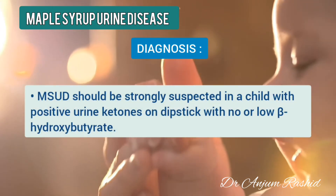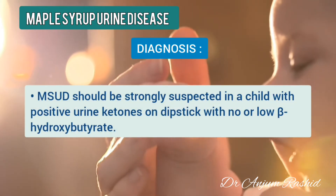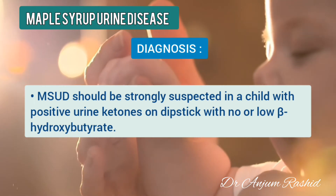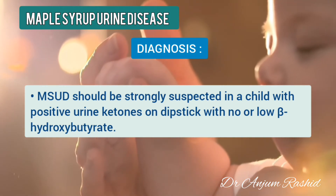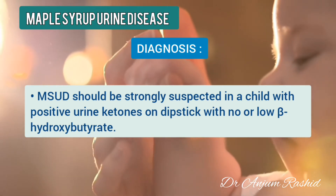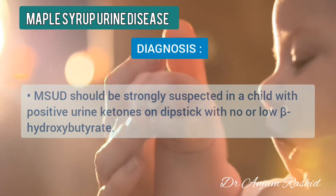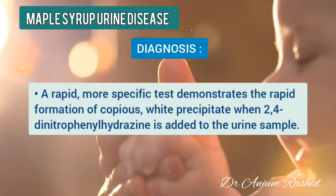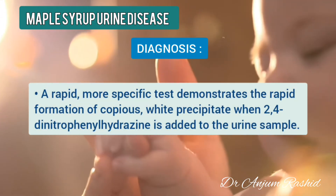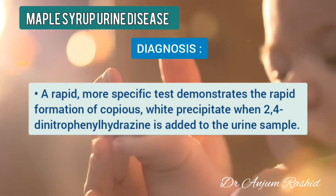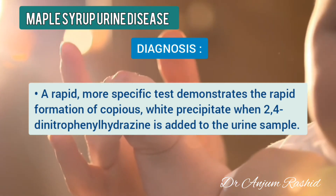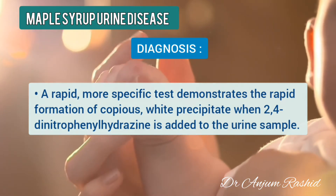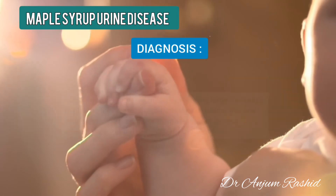Maple syrup urine disease should be strongly suspected in a child with positive urine ketones on the dipstick with no or low beta-hydroxybutyrate. A rapid, more specific test demonstrates the rapid formation of copious white precipitate when 2,4-dinitrophenylhydrazine is added to the urine sample.